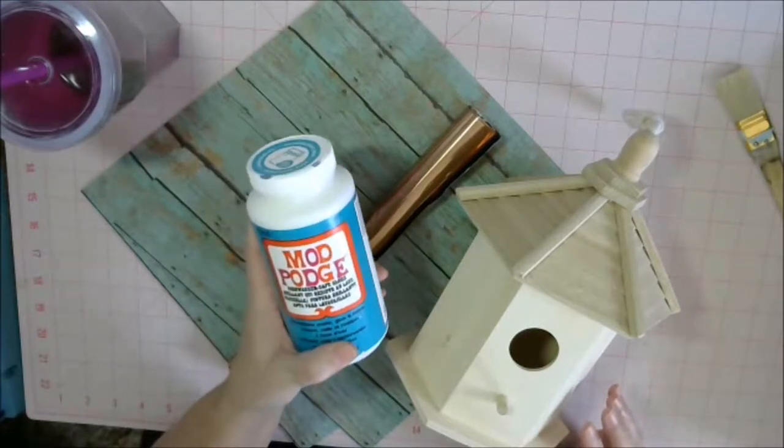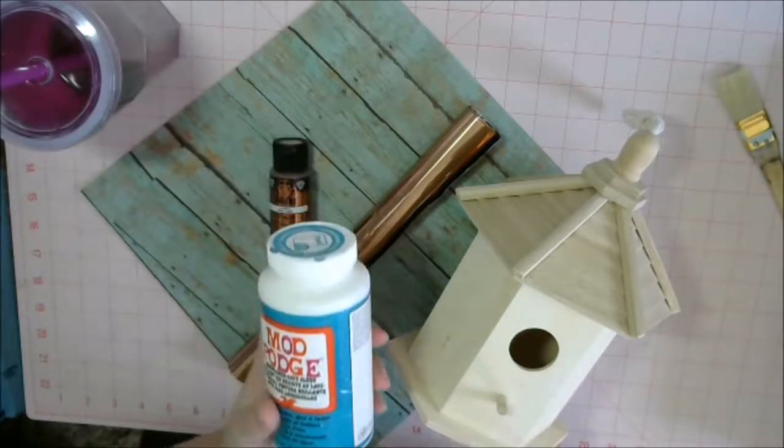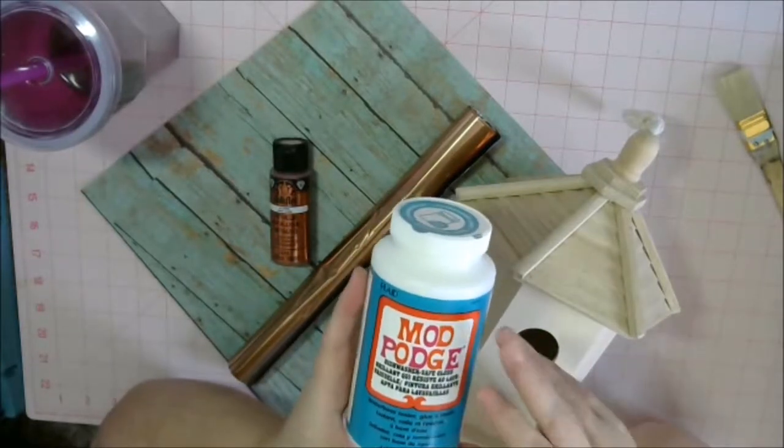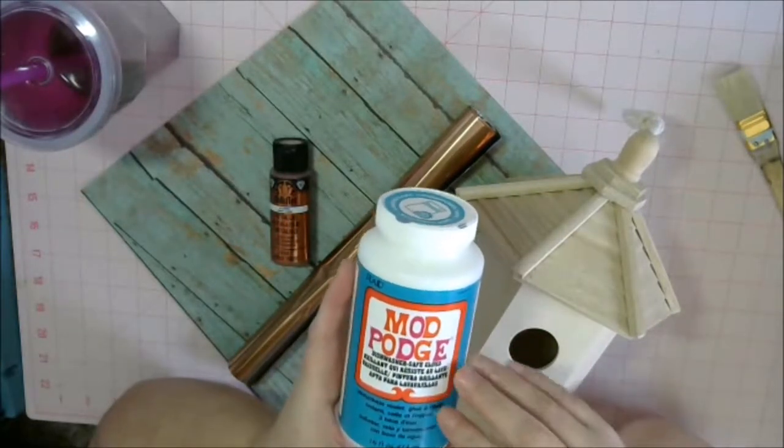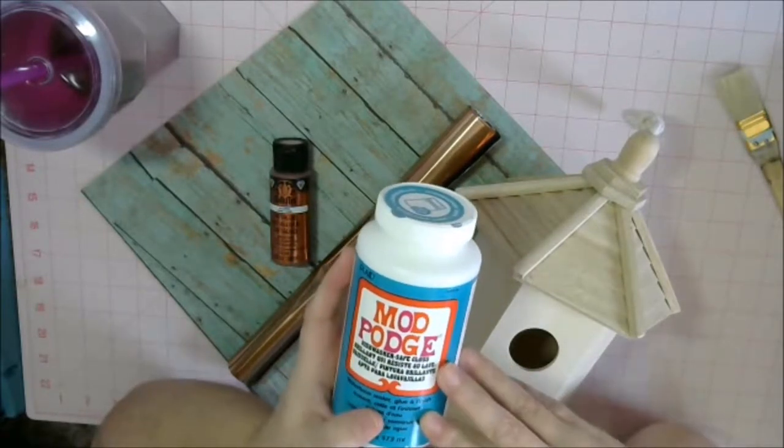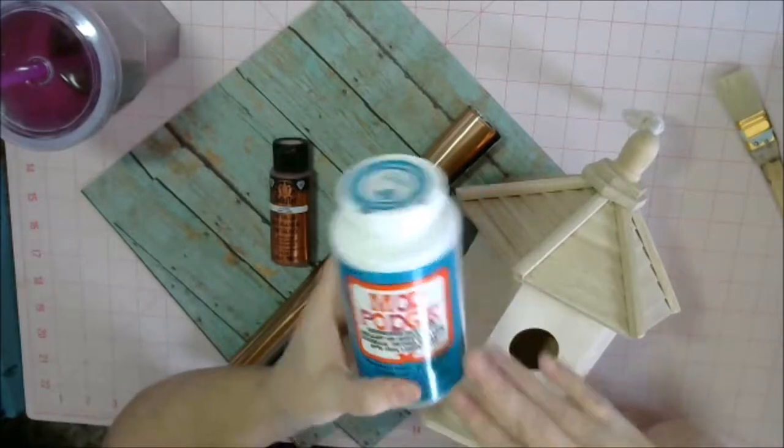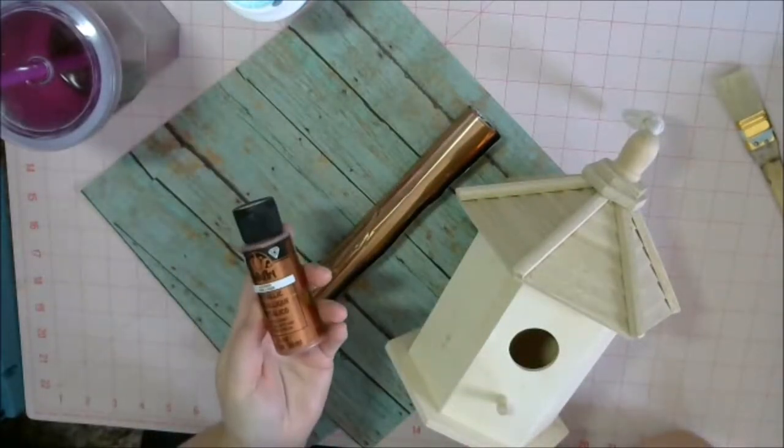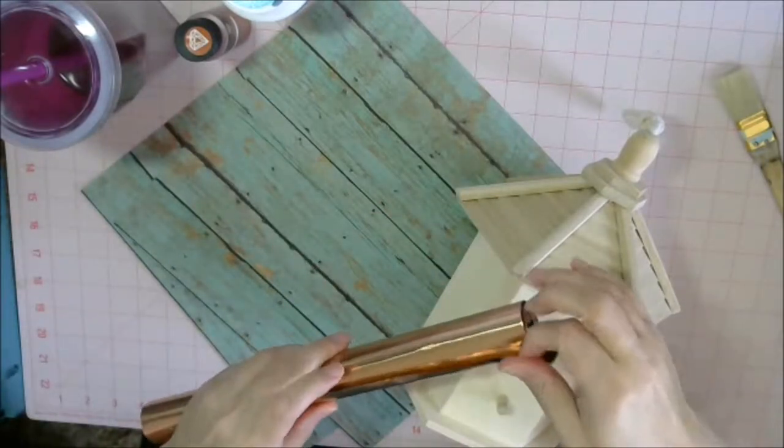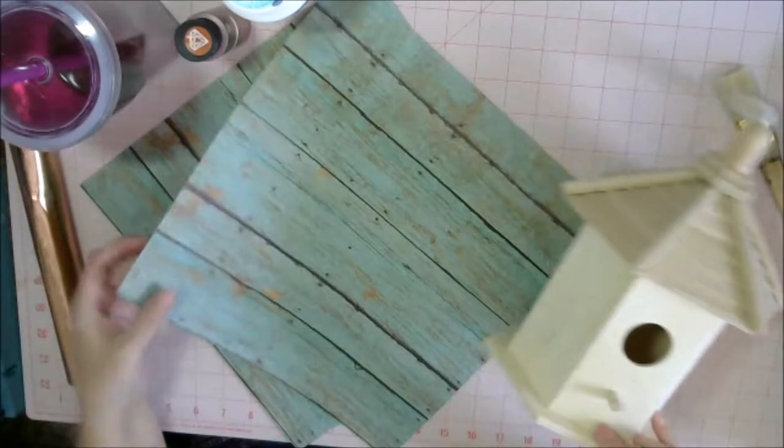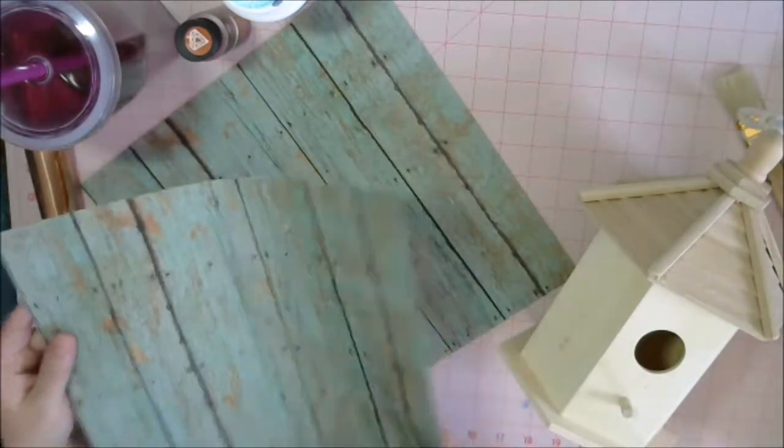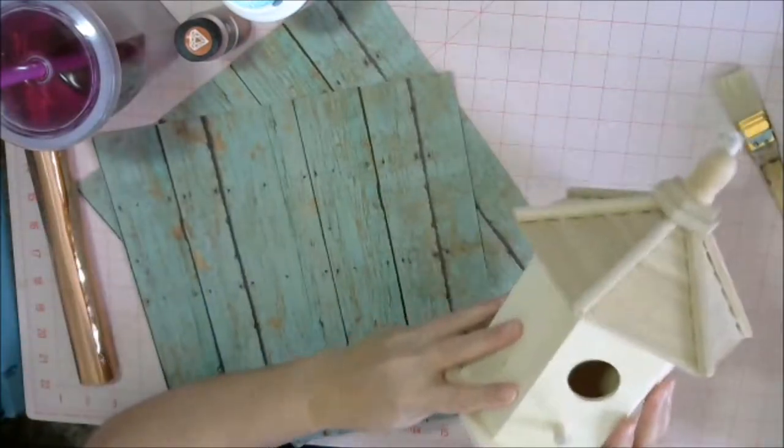I am using the dishwasher safe Mod Podge, which is also safe for outdoor use, so if you have the dishwasher safe you don't need to go out and buy the outdoor, but I do suggest one of the two. I'm going to be using some copper paint, some copper foil, and of course I have two sheets of scrapbook paper that I picked up at the store.